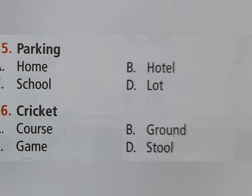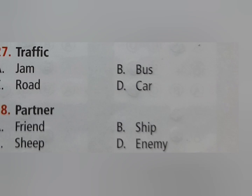The right answer is option D lot — parking lot. Sixth: cricket — option A course, option B ground, option C game, option D stool. The right answer is option B ground — cricket ground. Seventh: traffic — option A jam.